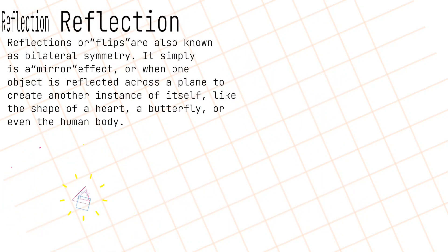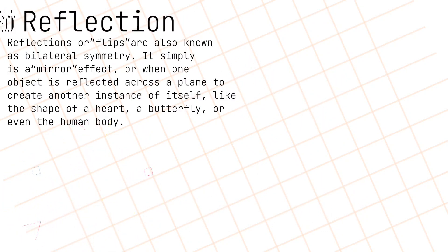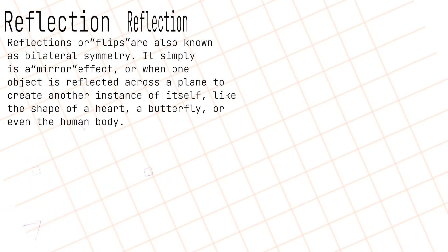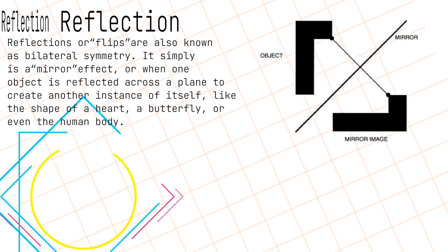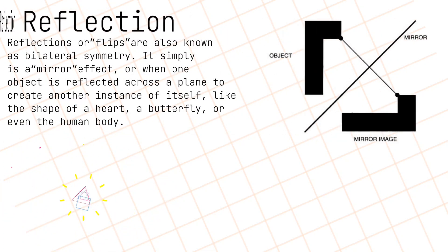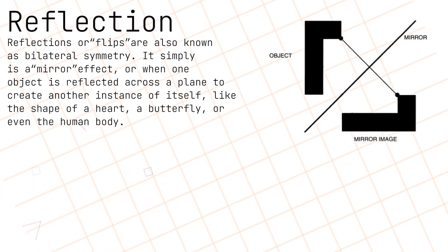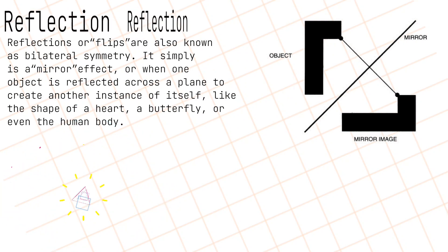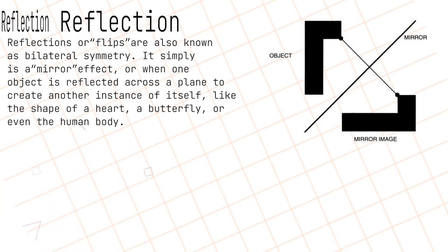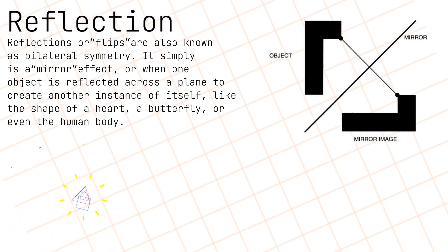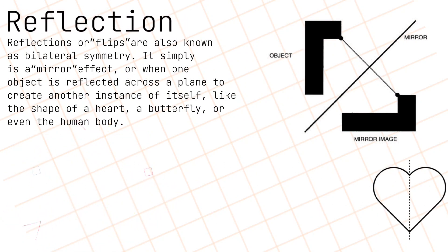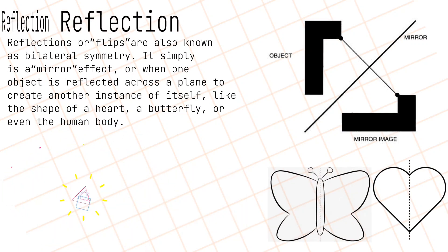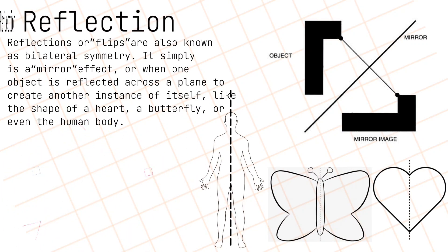Reflections, or flips, are also known as bilateral symmetry. It simply is a mirror effect, or when one object is reflected across a plane to create another instance of itself — like the shape of a heart, a butterfly, or even the human body.